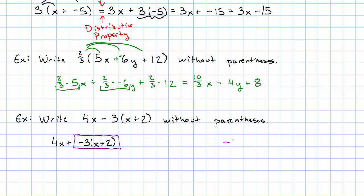We have negative 3 times x plus 2. Distributing, we'll have negative 3 times x plus negative 3 times 2. So, we have negative 3x minus 6. We take that negative 3x minus 6. Take it back to replace this term. And we have 4x minus 3x minus 6.